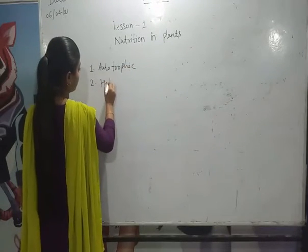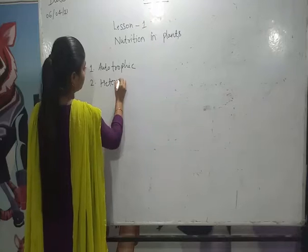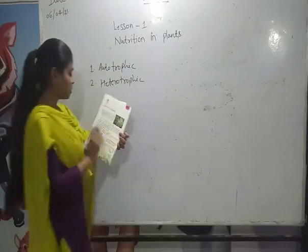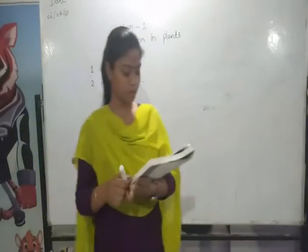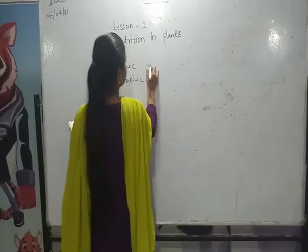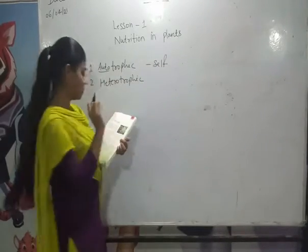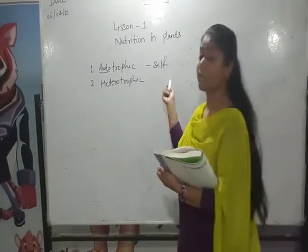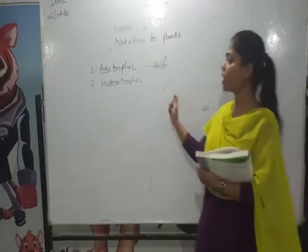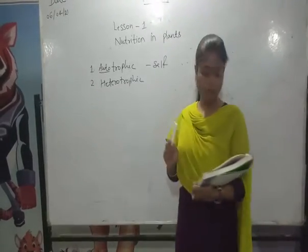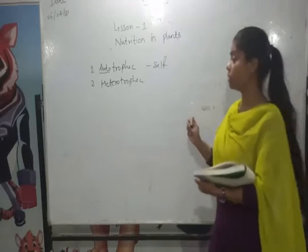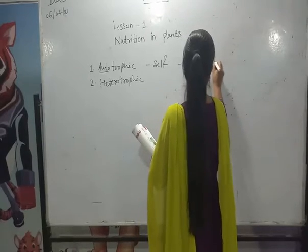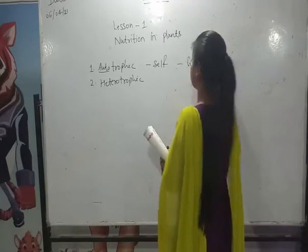Autotrophic and Heterotrophic — what is the difference between them? The term 'auto' means self. Self means to feed or to make the food. Autotrophic is called self-nutrition, meaning the organism makes food for itself. The example of autotrophic organisms is green plants.